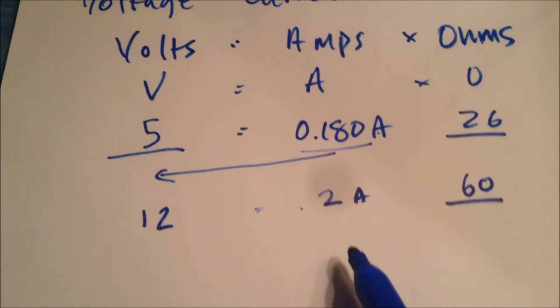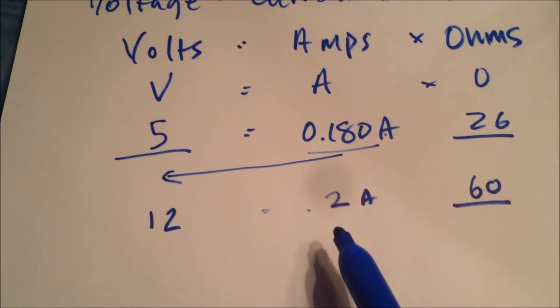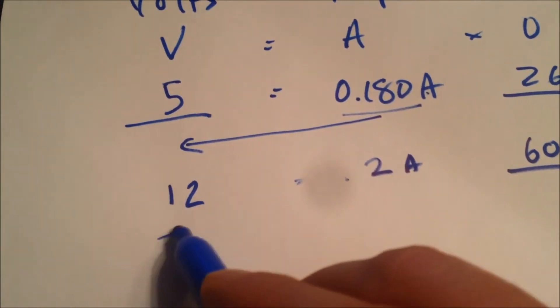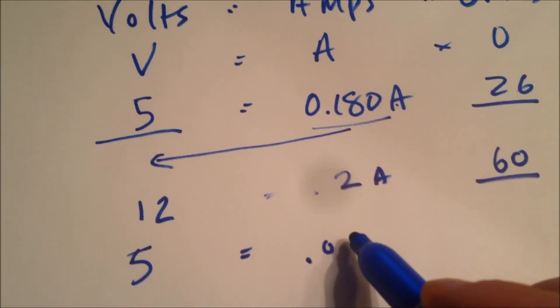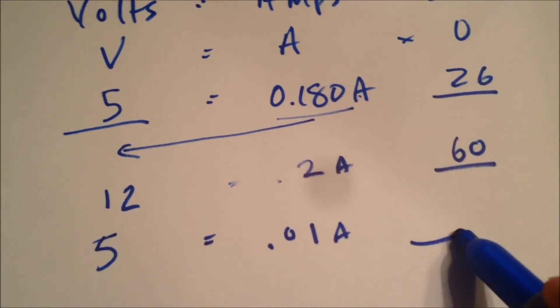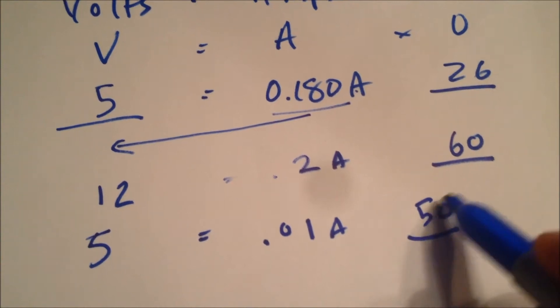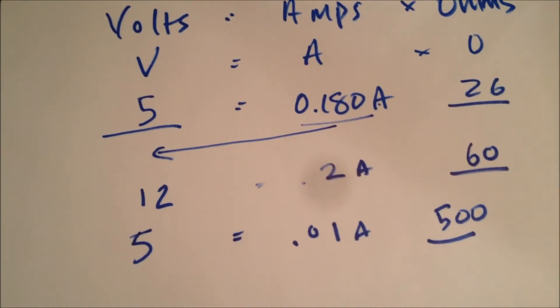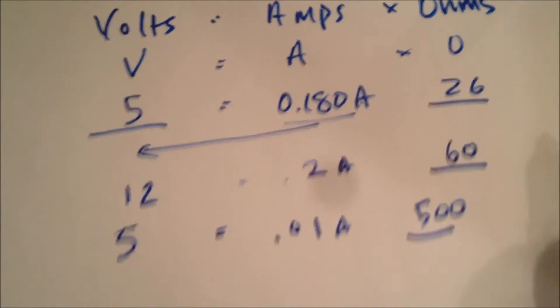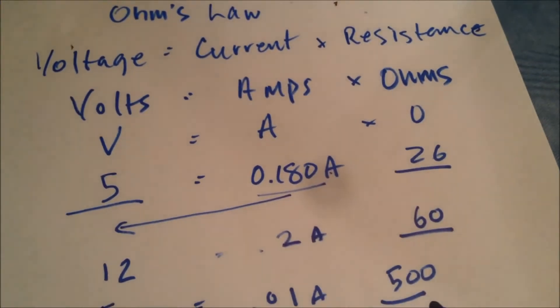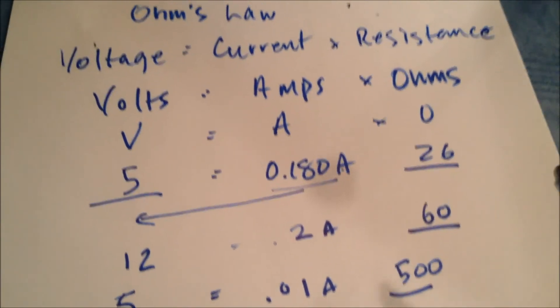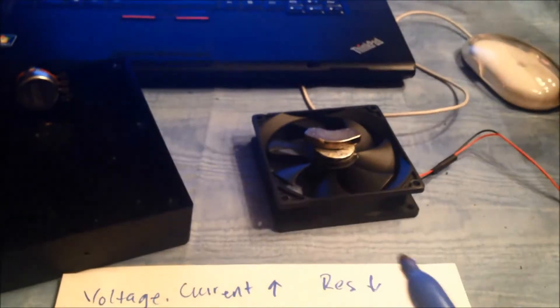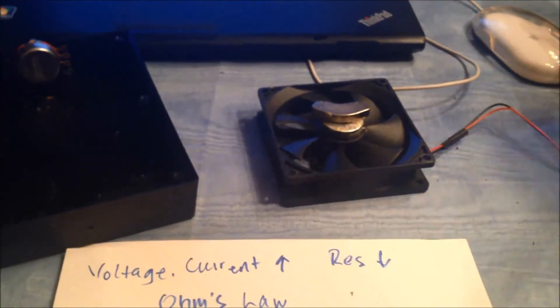To slow the fan completely, I need to supply nearly 0 amps of current. For example, 5 volts equals, let's say, 0.01 amps. That equals 500 ohms. That will completely slow down that fan to nothing. So when I dial the potentiometer, I can dial it between 26 and 500 ohms. If I had a potentiometer rated at 500 ohms, I could dial it between 26 and 500, and that would completely move the fan from nothing to its maximum.